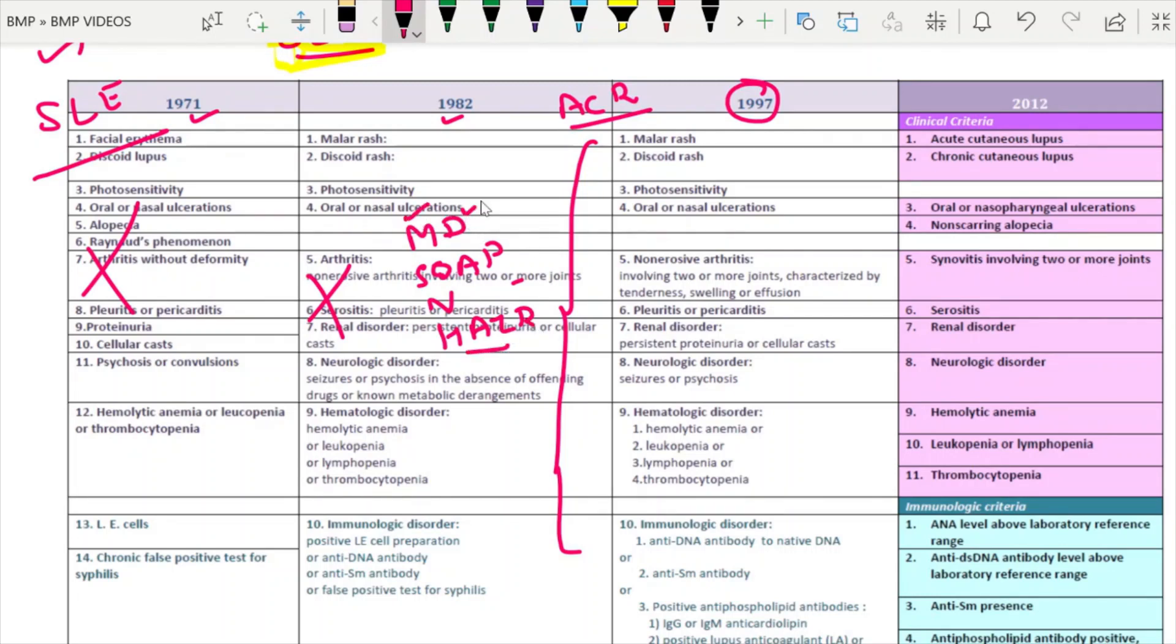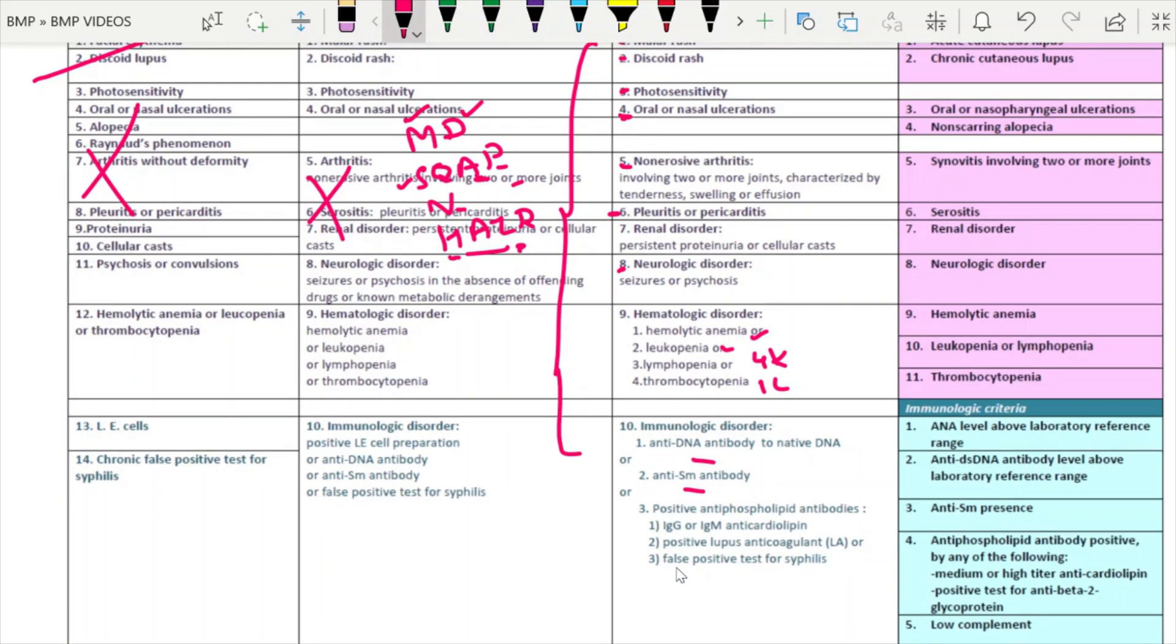M is for malar rash, D discoid rash, S serositis, O oral or nasal ulceration, A arthritis, N neurological involvement, D hematological involvement either hemolytic anemia, leukopenia or lymphopenia with count less than 4000, or thrombocytopenia less than one lakh. I is immunological involvement in the form of either anti-dsDNA positive or anti-Smith, APLA, or ANA.